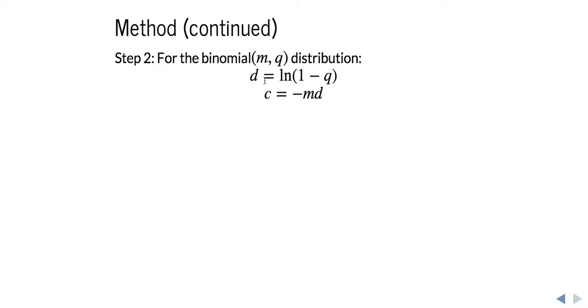So for the binomial distribution, we actually have this way of calculating lambda_k. Just memorize it. d and c both depend on the parameters of the binomial distribution. And then we can calculate lambda_k based on those values, c and d.